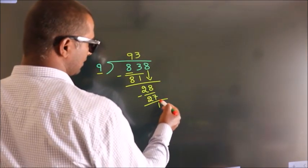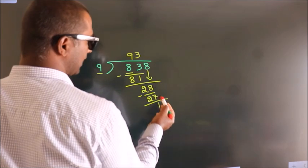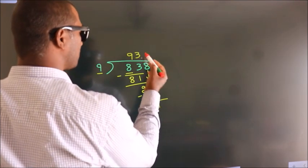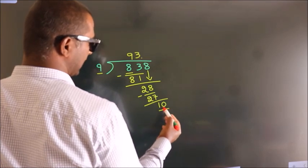After this, no more numbers to bring it down. So what we do is, we put a dot and take 0. So 10.